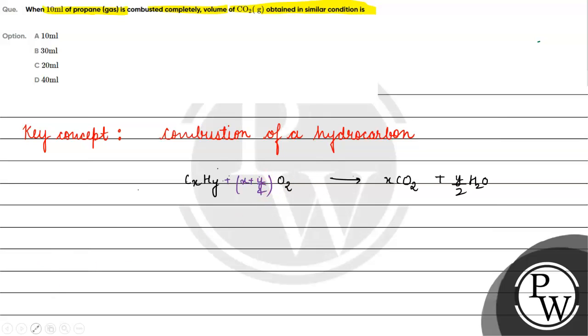Now, if we look at one volume of CxHy... So if we look at 10 ml of CxHy, what do we get? We will get 10X volume of carbon dioxide.